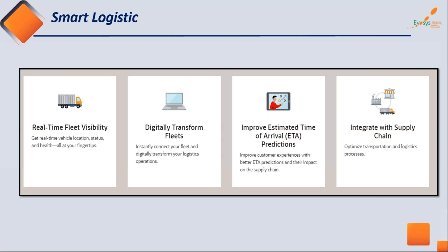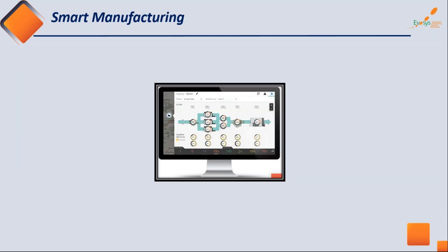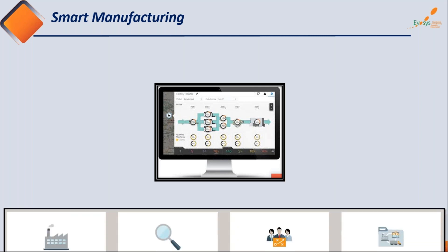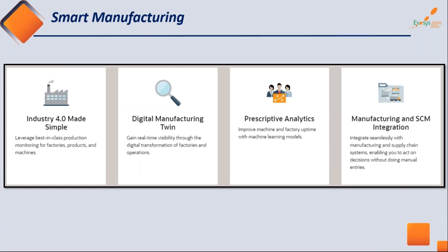Another very important area is smart manufacturing. This comes into picture when you have a factory that needs to be monitored for a number of products with routing and everything. Industry 4.0 made simple — be it manufacturing on the production floor or assets, you can define a digital manufacturing twin. For example, if you don't want to incur the cost of procuring new sensors for new machines, IoT applications let you define your digital twin.